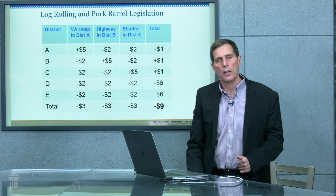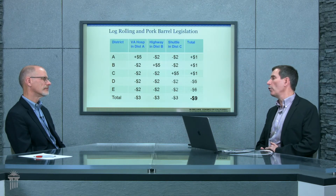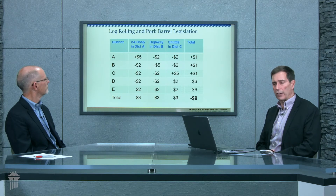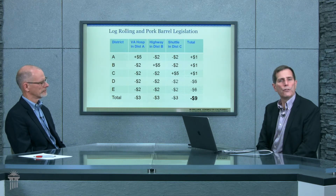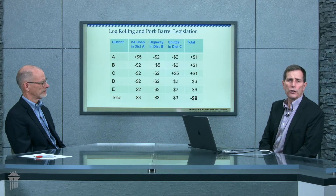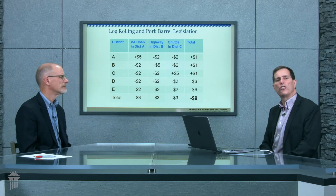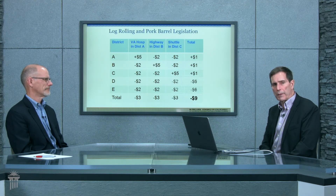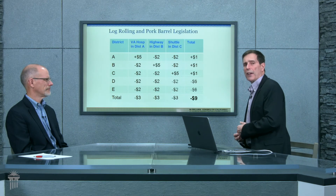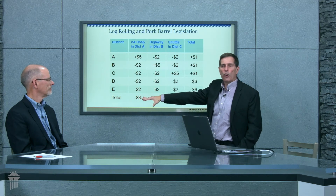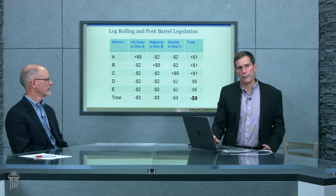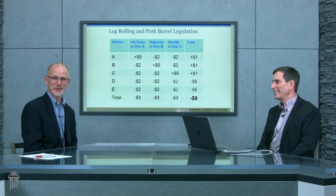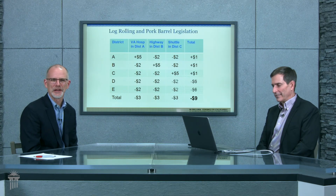If you sum up the total benefits across all five districts, you get a net negative nine overall as a population. But the reality is there are three votes for and two votes against — this passes, producing a massively negative social benefit. Log rolling is simply vote trading. Even if you outlaw official vote trading, they bundle all three bills into one — that's a pork barrel bill — something for everyone to get it to pass, while the minority pays for it. That minority may well be future taxpayers. Thank you for joining us for this episode of No Free Lunch Economics for a Fallen World.